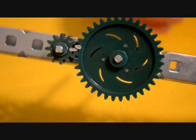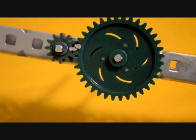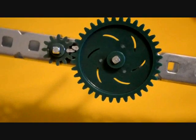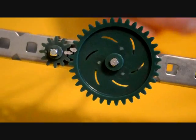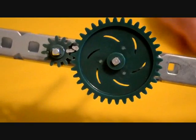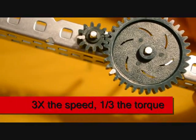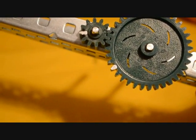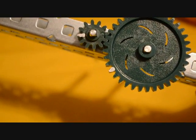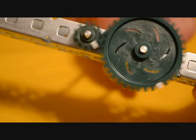Notice the driven gear in this case has gone around three times. So this is known as a 1 to 3 gear ratio when we drive the 36-tooth gear and let the 12-tooth gear be driven.